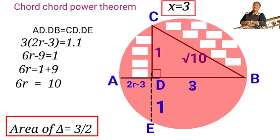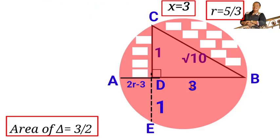So 6R equals to 1 plus 9. So we have 6R equals to 10. We divide both sides by 6. So R will be equal to 10 over 6. We reduce it to its lowest term. R is 5 over 3. So we have found the radius of this circle.